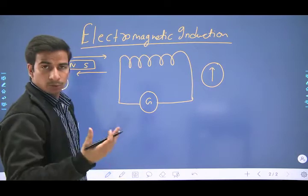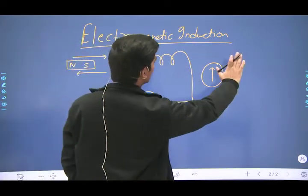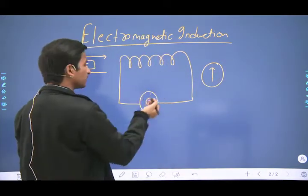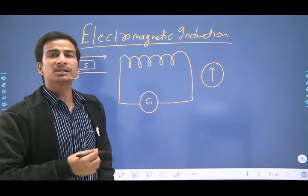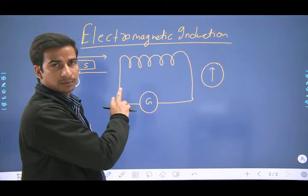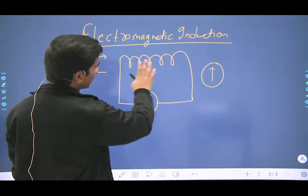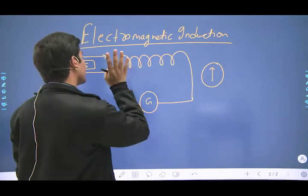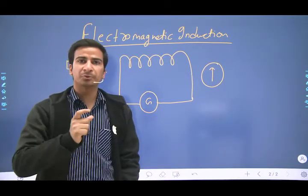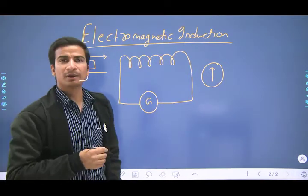Similarly, another thing can be done. If the magnet is stable, you can move the coil away from or toward the magnet, and this can also produce the same current. Electromagnetic induction requires a relative motion between the magnet and the coil — either the magnet is stable and the coil is moving, or the coil is stable and the magnet is moving. The velocity of the coil and the velocity of the magnet should be different.